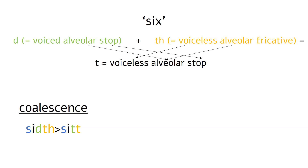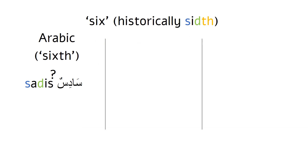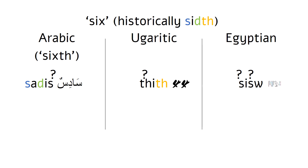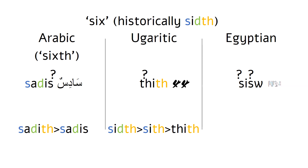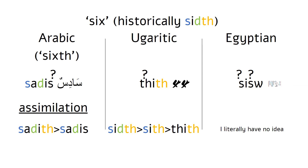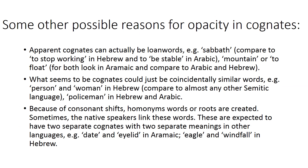Now that we've established the origin for the word 'sixth', we can see another thing that happens if we go back to Arabic. This time let's look at the word for 'sixth' and add two other dead languages, Ugaritic and Egyptian — which is actually not Semitic, but is somewhat related and can help make this point. We can see that in all of them, two different but somewhat similar consonants became the same one. This is called long-distance assimilation — long-distance because these consonants are not actually together, but have something that separates them, in this case almost a whole word.